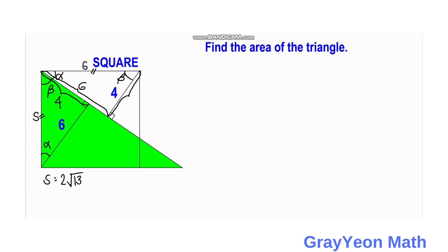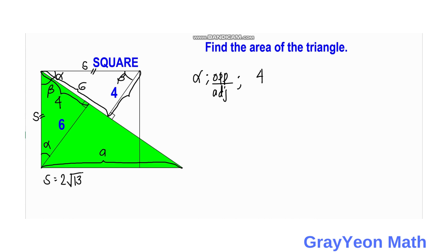Next, we need to find the distance — let us call this length a — from one point to another along the hypotenuse. We need this because it will serve as the base of the right triangle, and we already have the height which is s. To find a, we use the ratio of opposite over adjacent. Referring to angle alpha, the opposite is four and the adjacent is six.